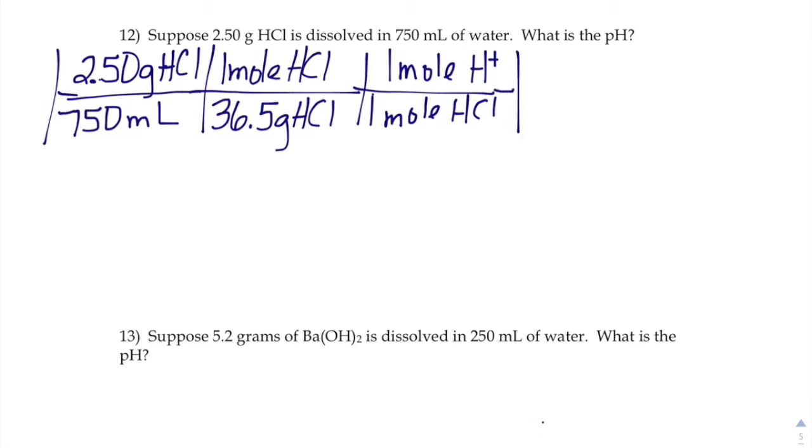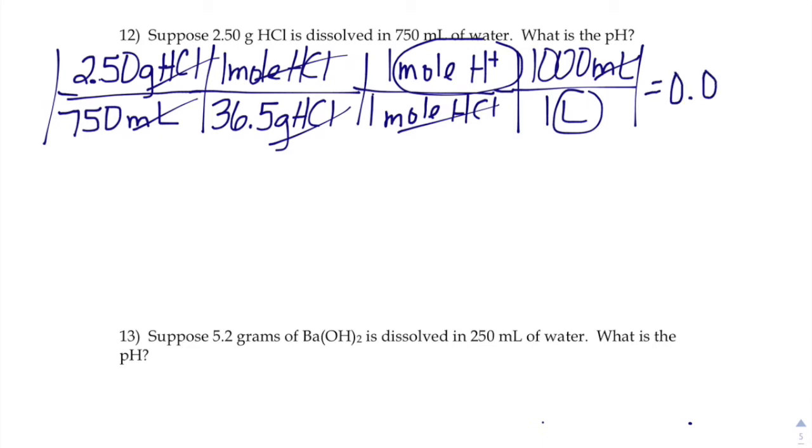We're almost there. Right now we have moles per milliliter and we need moles per liter to get a molarity, right? So I'm gonna tack on one last little step here—milliliters to liters. Everything's gonna end up canceling out except for moles of H⁺ and liters—molarity of our H⁺. So if we do a little bit of solving there for H⁺, we should get 0.0913 moles per liter.